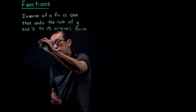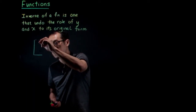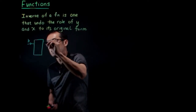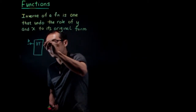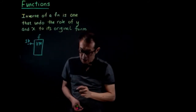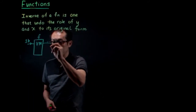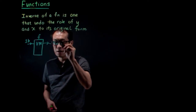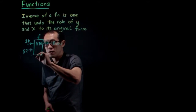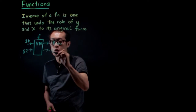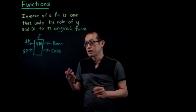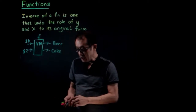Let me show you an example. Let's say you have a vending machine — we'll call it F. You put a dollar in, you get a beer. You put two dollars in, you get a coke.